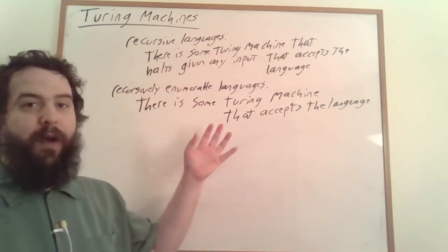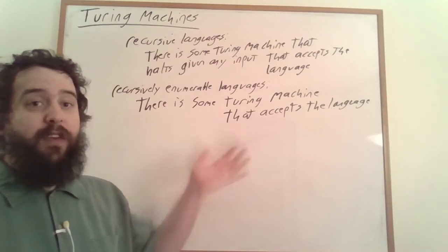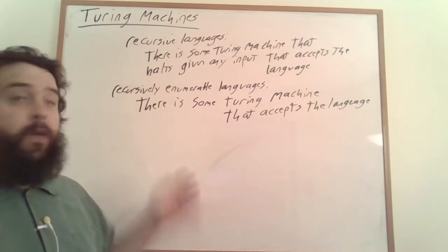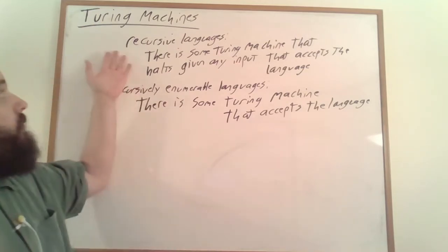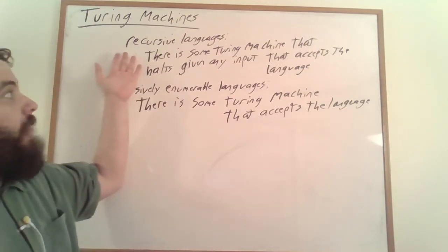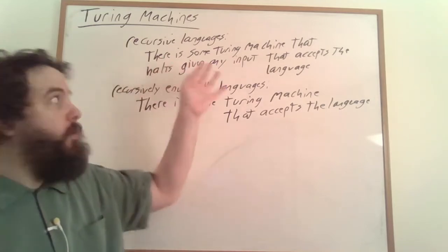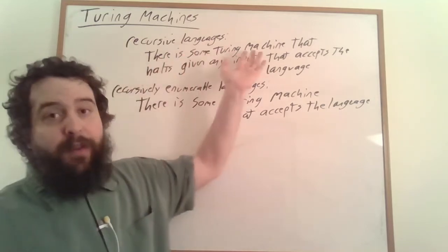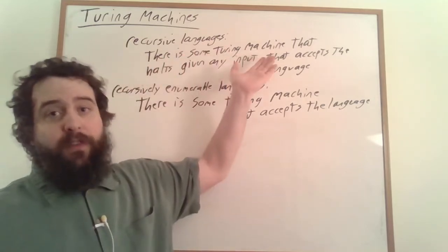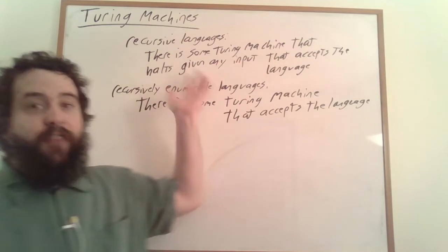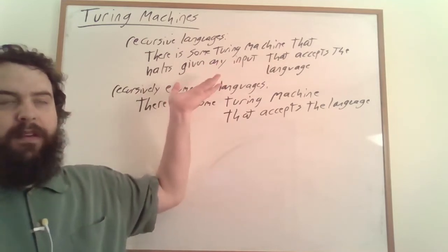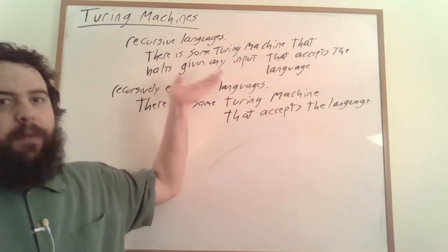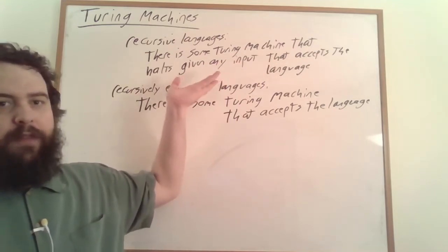But there are two big limitations. First, in order to claim that a particular Turing machine gives you a recursive language, you're going to have to show that that Turing machine halts given any input. We said that the halting problem is not universally solvable, so when you define a particular recursive language, you're going to have to do a little bit of work to verify that the Turing machine actually does halt given any input. Sometimes this is very easy, sometimes this can be kind of tricky.